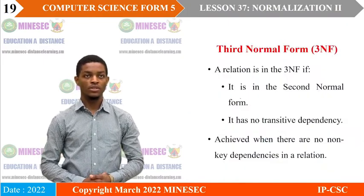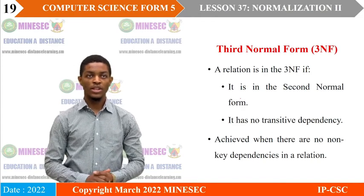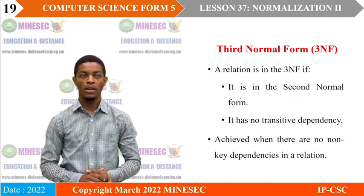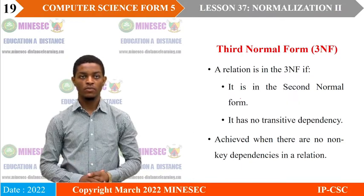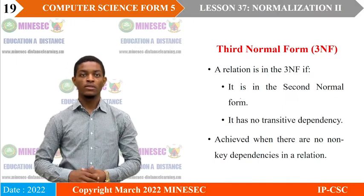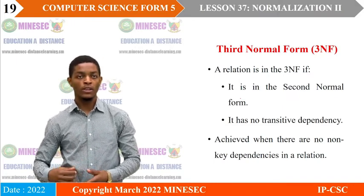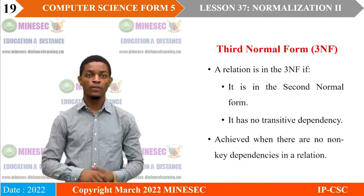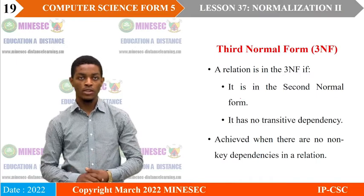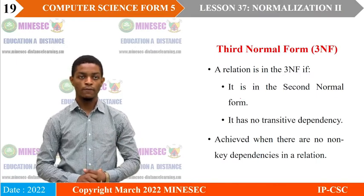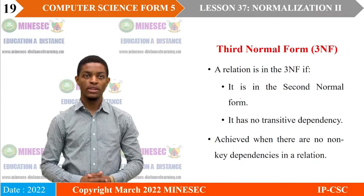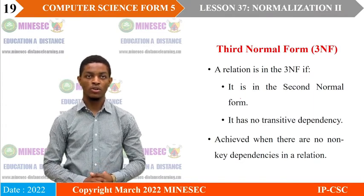The third normal form: a relation is in the third normal form if it is first in the second normal form and has no transitive dependency. A transitive dependency means a non-key field depends on another non-key field, whose value can itself be obtained from a non-key field. To obtain a relation in the third normal form, we need no non-key dependencies and must already be in the second normal form.